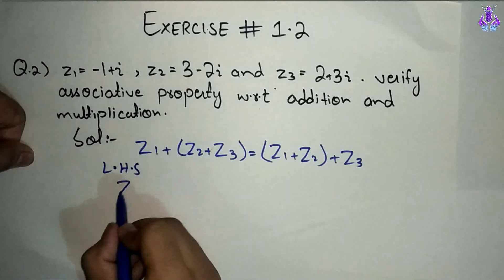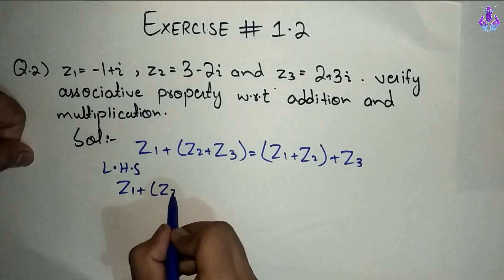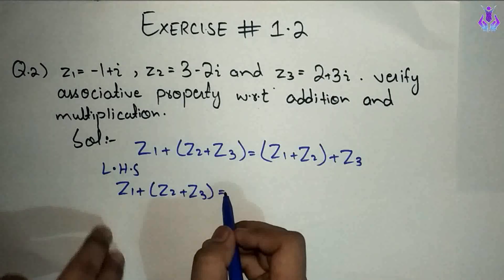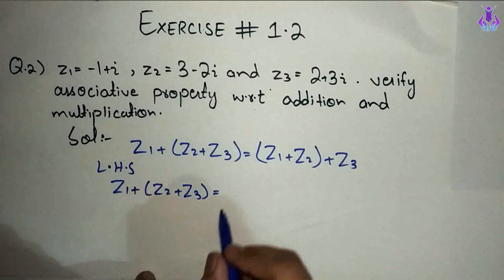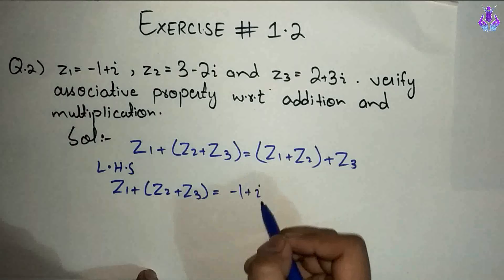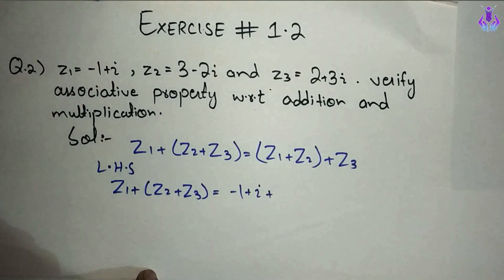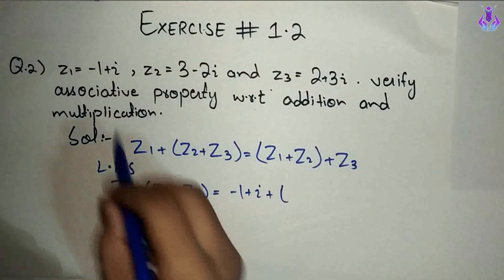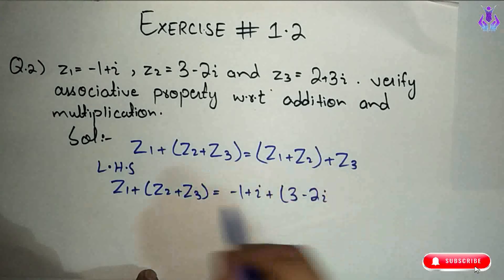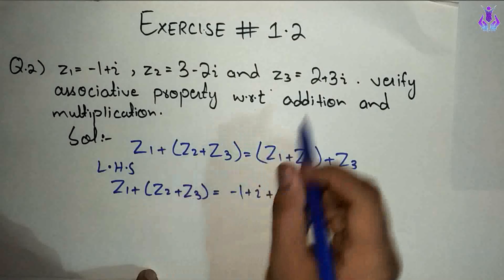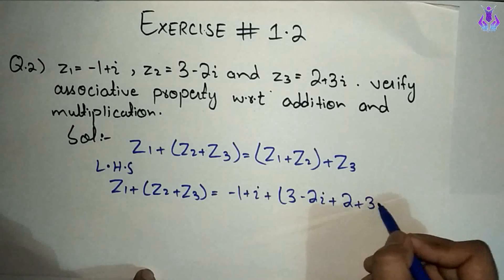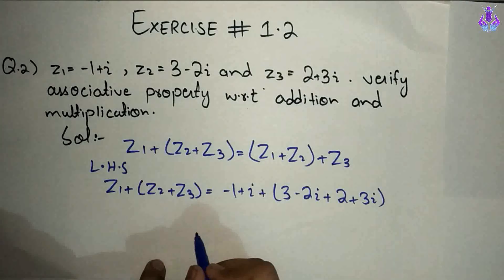Left hand side: z1 plus (z2 plus z3) equal to. Z1 ki value hamare paas minus 1 plus iota, plus z2 ki value 3 minus 2 iota, plus z3 ki value 2 plus 3 iota. Ab bracket wali term ko hum log pehle solve karte hain.